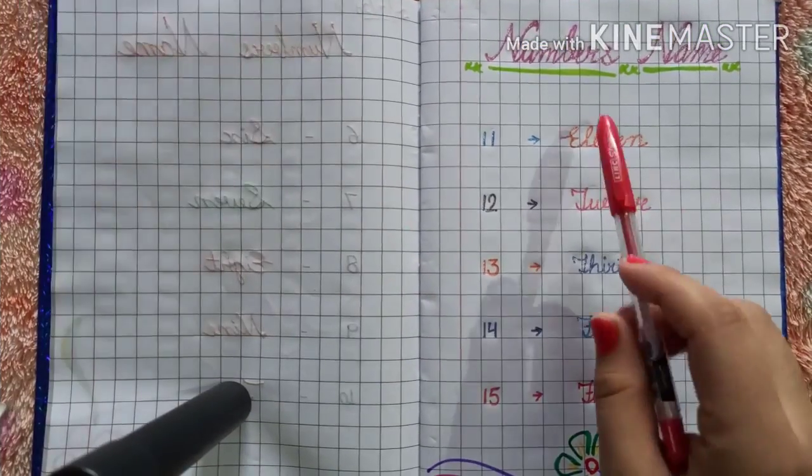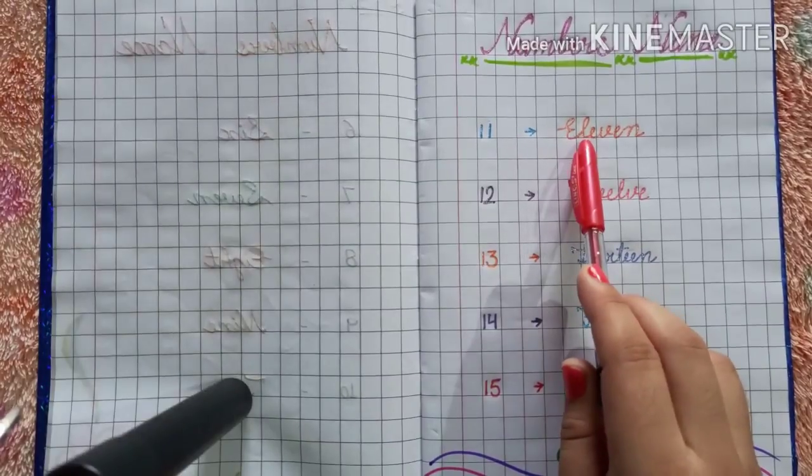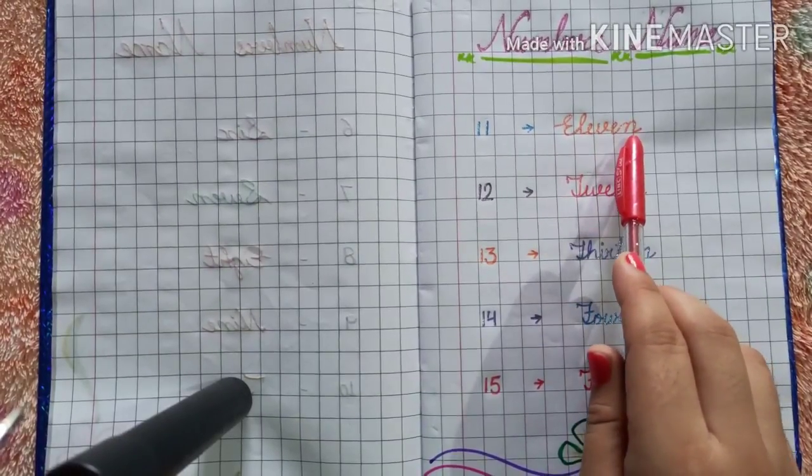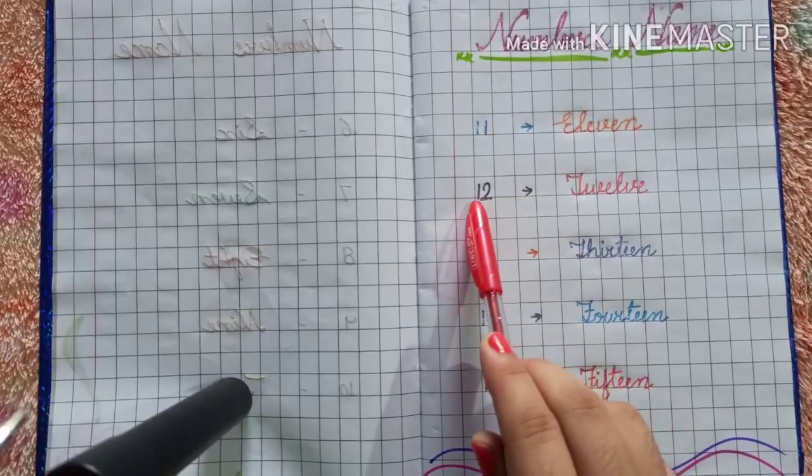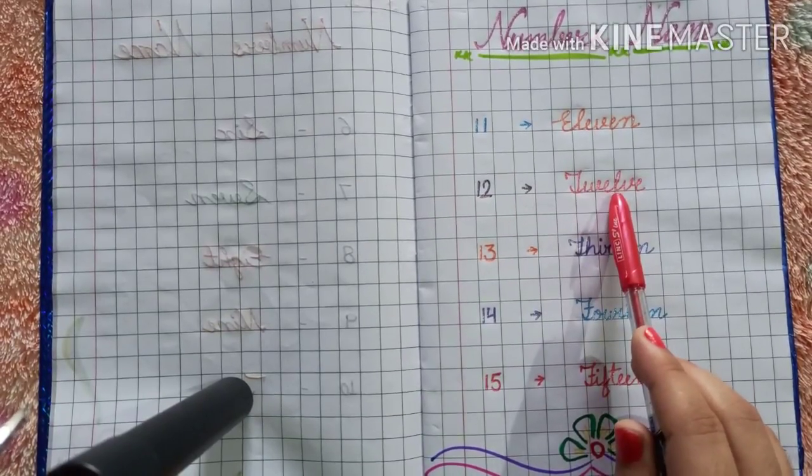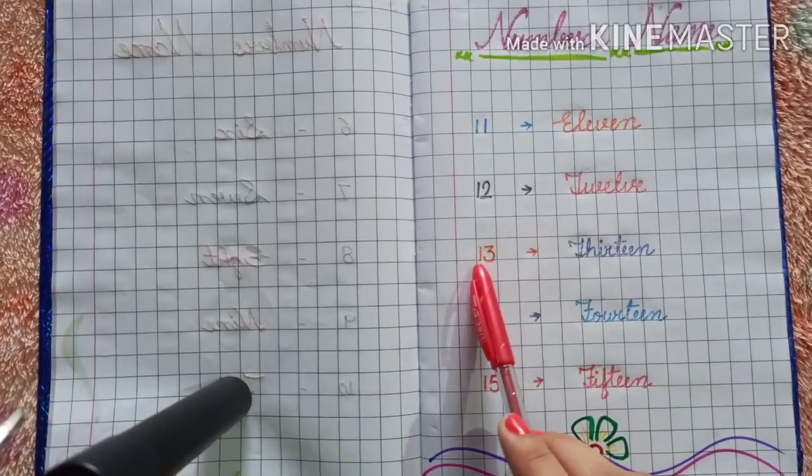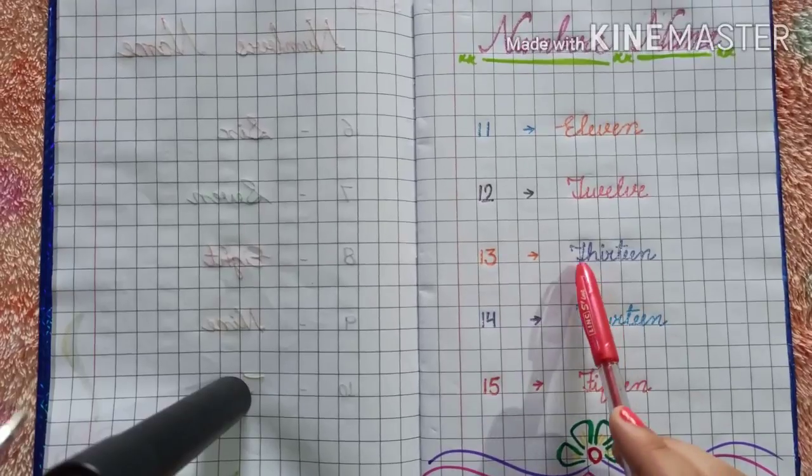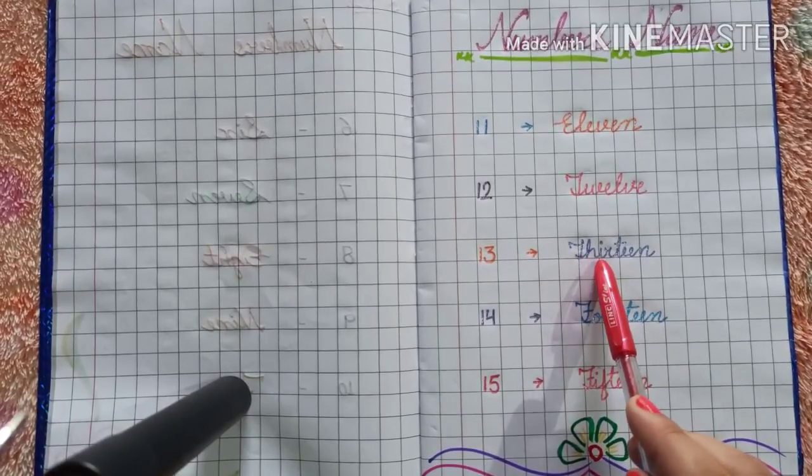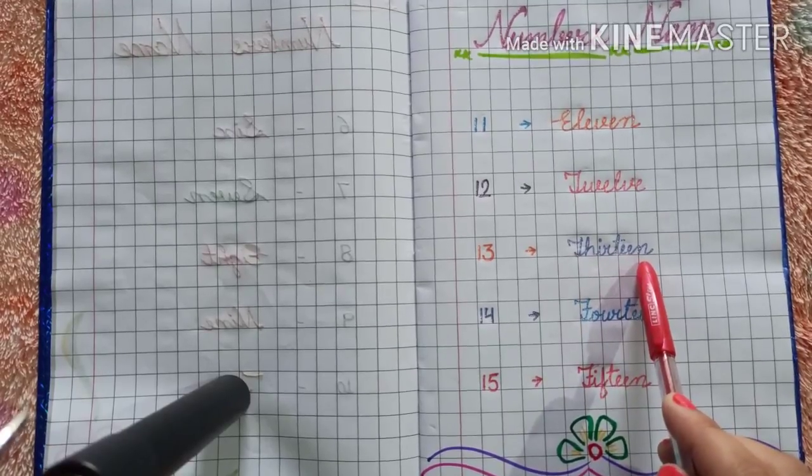Now let's see notebook. Write heading numbers name. Then 11. E L E V E N. 11. 12. T W E L V E. 12. 13. T H I R T E E N. 13.